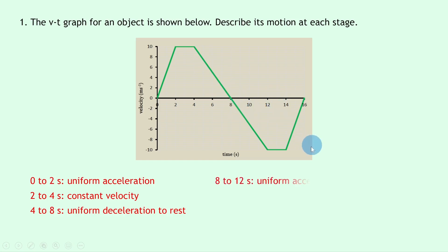Then from eight to 12 seconds we have a uniform acceleration in the opposite direction. So remember if we go from above the x-axis to below the x-axis or vice versa, then that tells us the object is changing direction. So we're going from positive velocities into negative velocities here, so we must have that in the opposite direction phrase there.